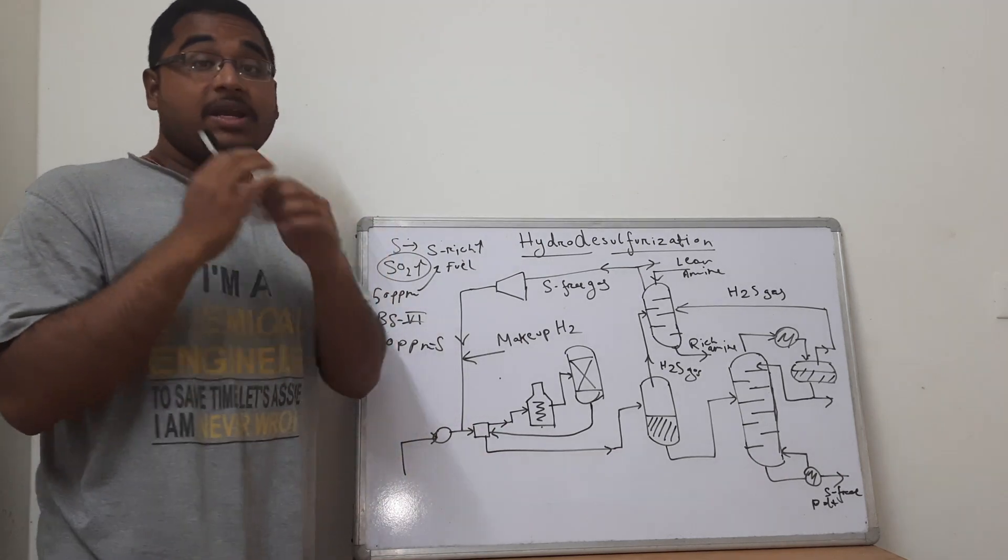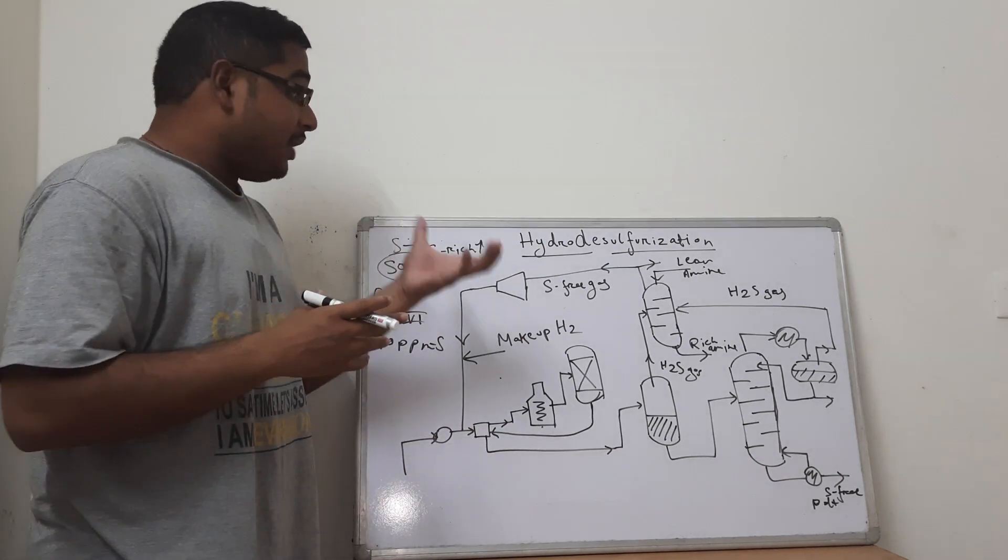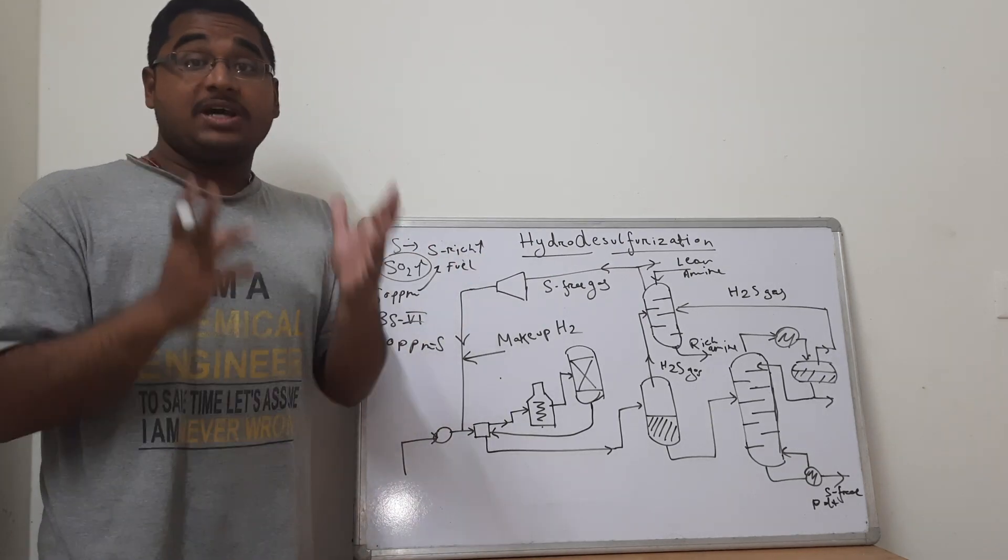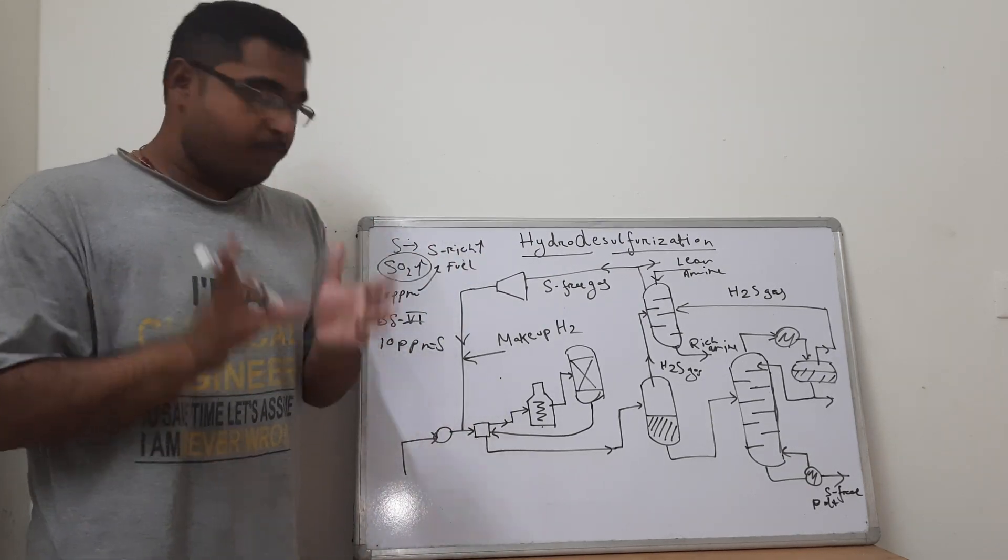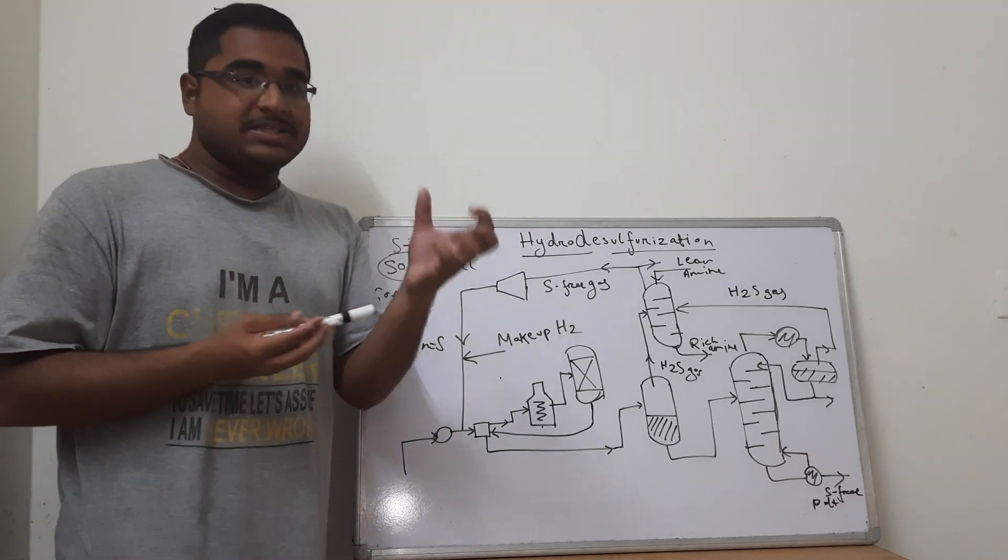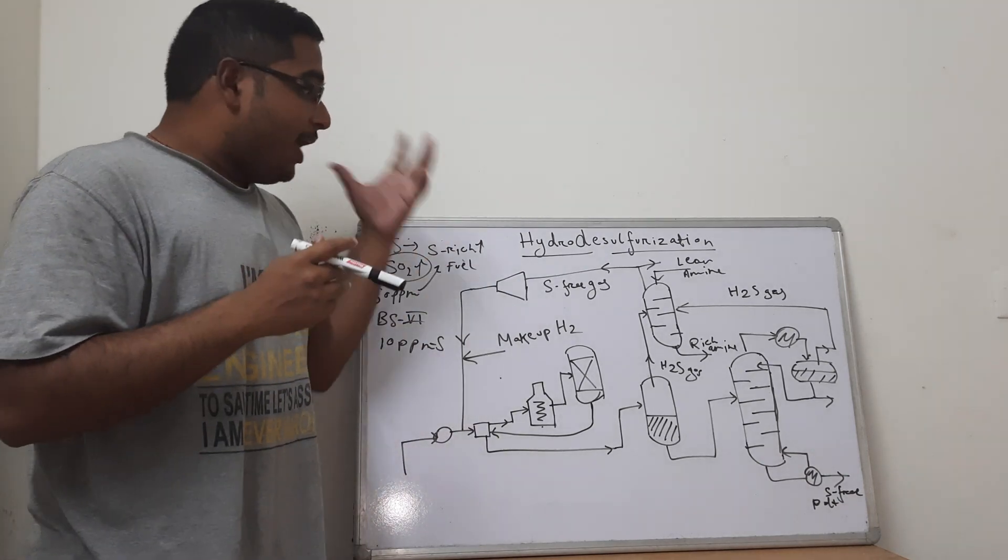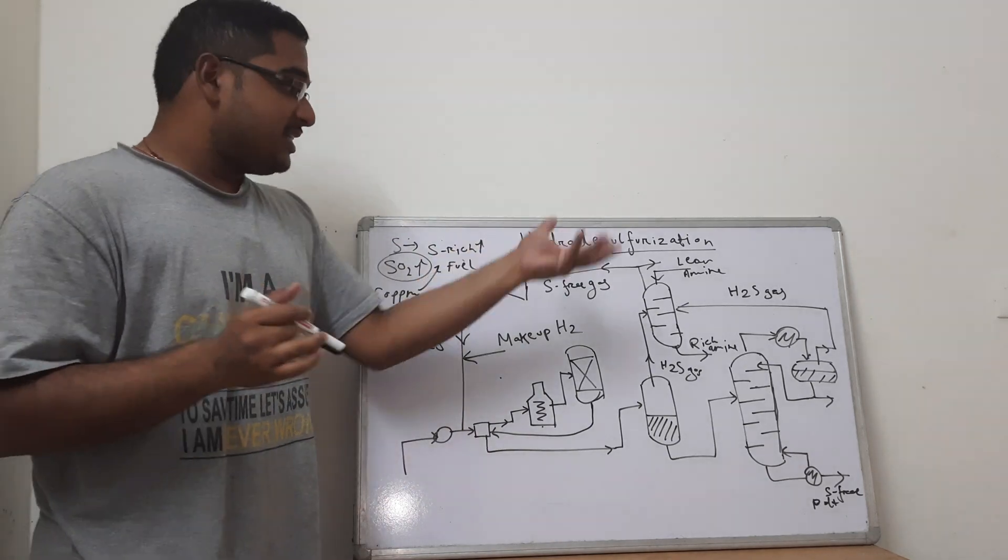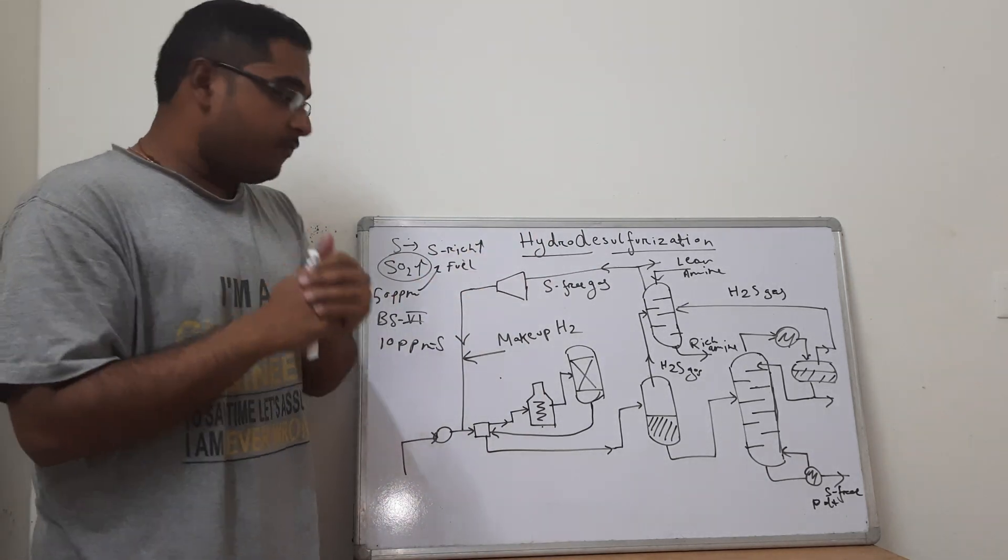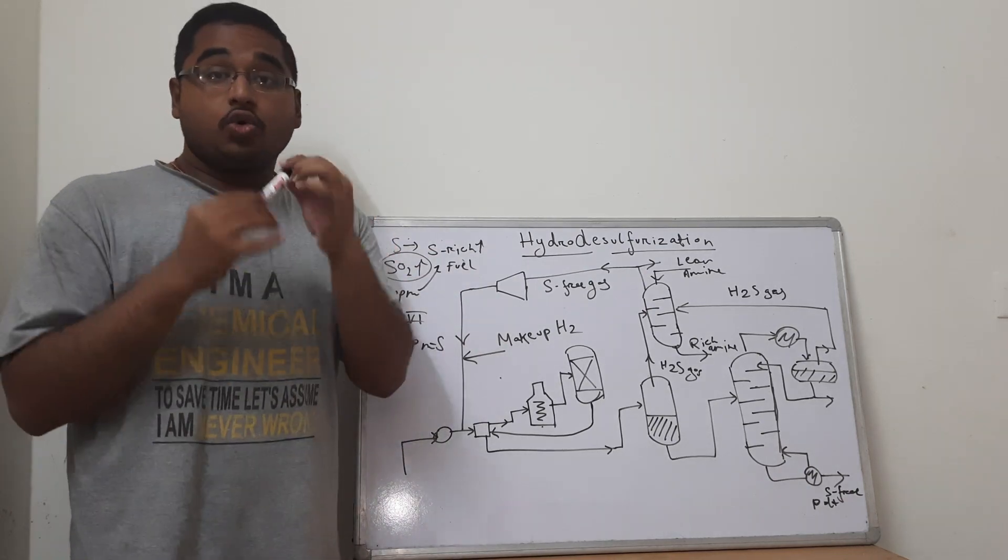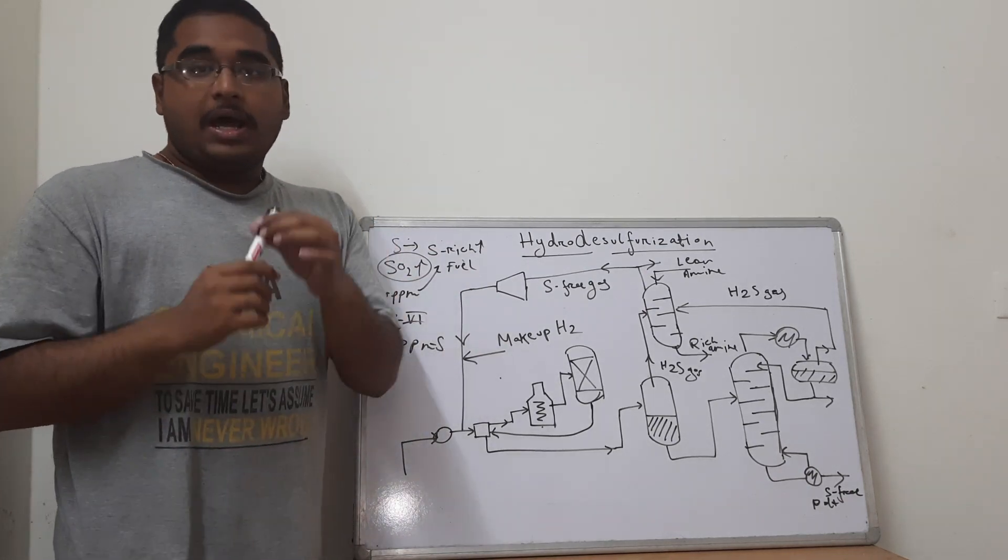Secondly, the presence of sulfur in any of the products particularly affects the reactor beds, the pipelines. Because sulfur in itself is a very corrosive product and anywhere you send the sulfur, it will tend to damage the structure. It will tend to attack the material of construction of the distillation columns, of the pipelines.